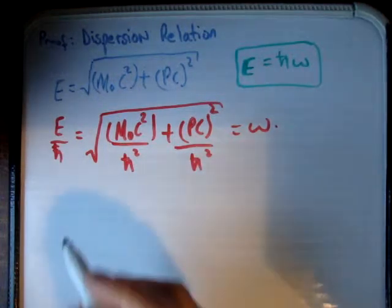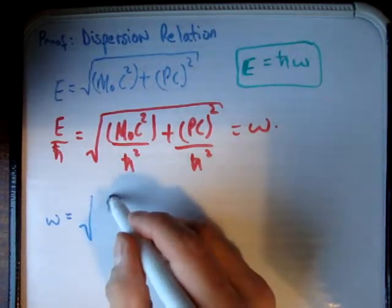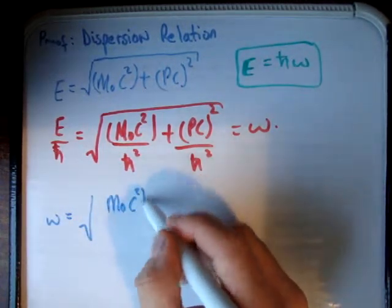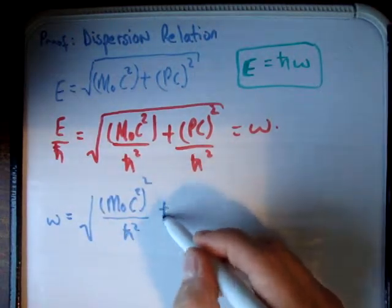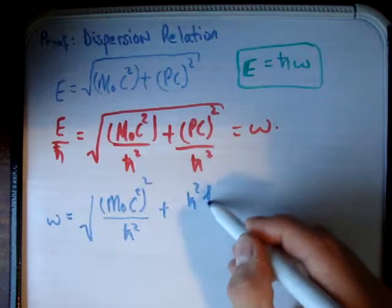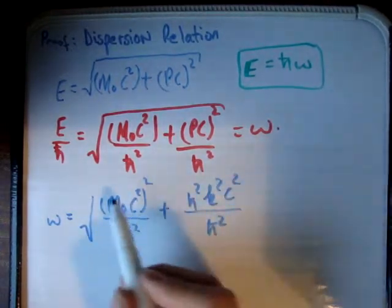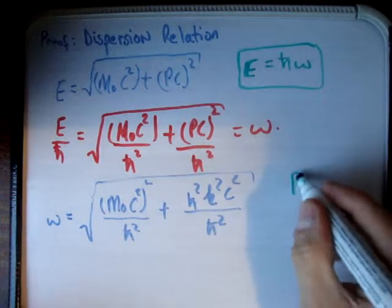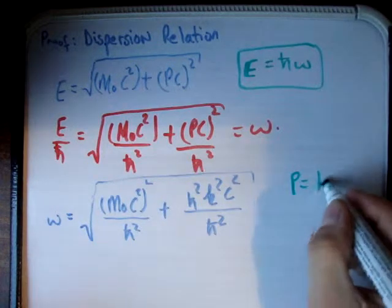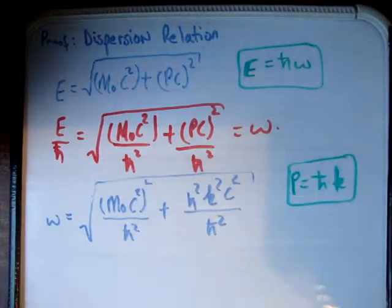Rearranging, we find that omega equals the square root of m₀c² squared divided by h-bar squared plus h-bar squared k squared c squared. You might ask where that comes from — the answer is that p is equal to h-bar k. That's just another small result; just take that for granted at the moment.